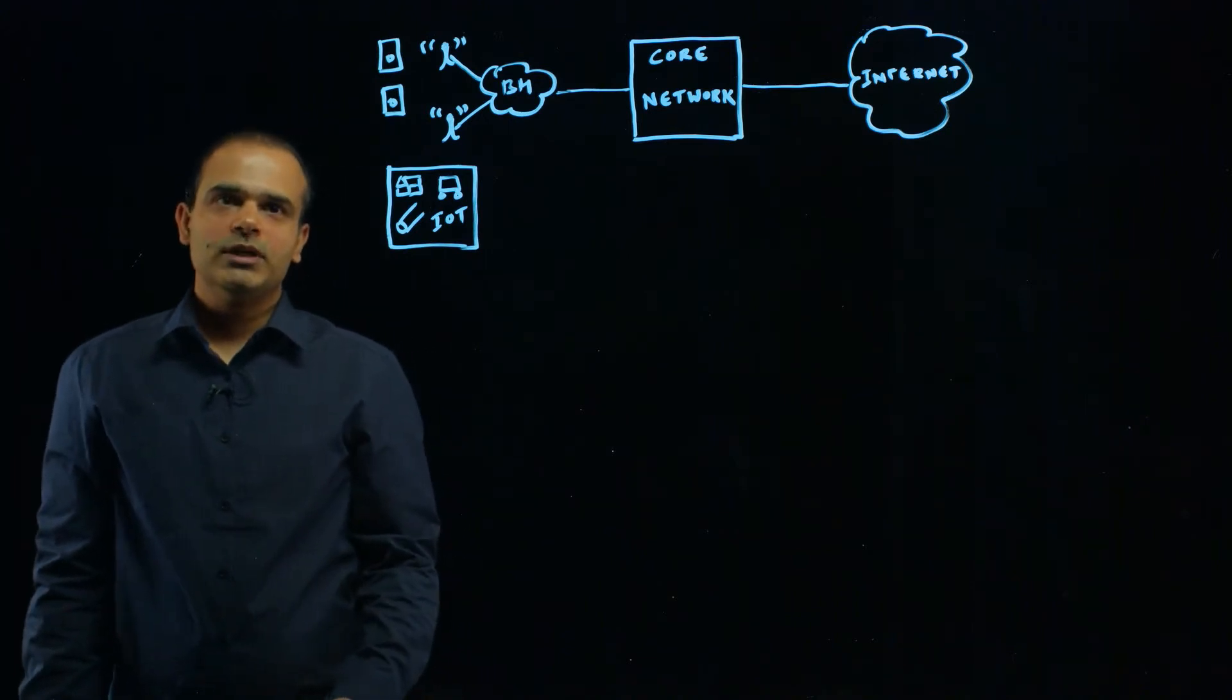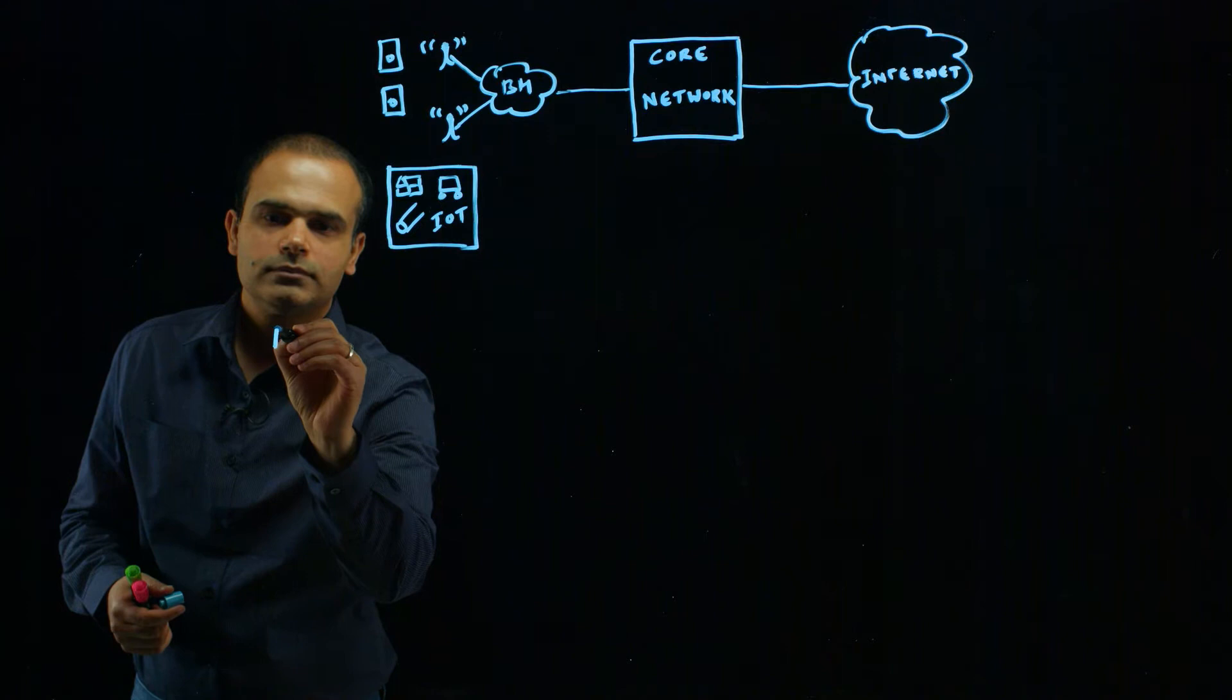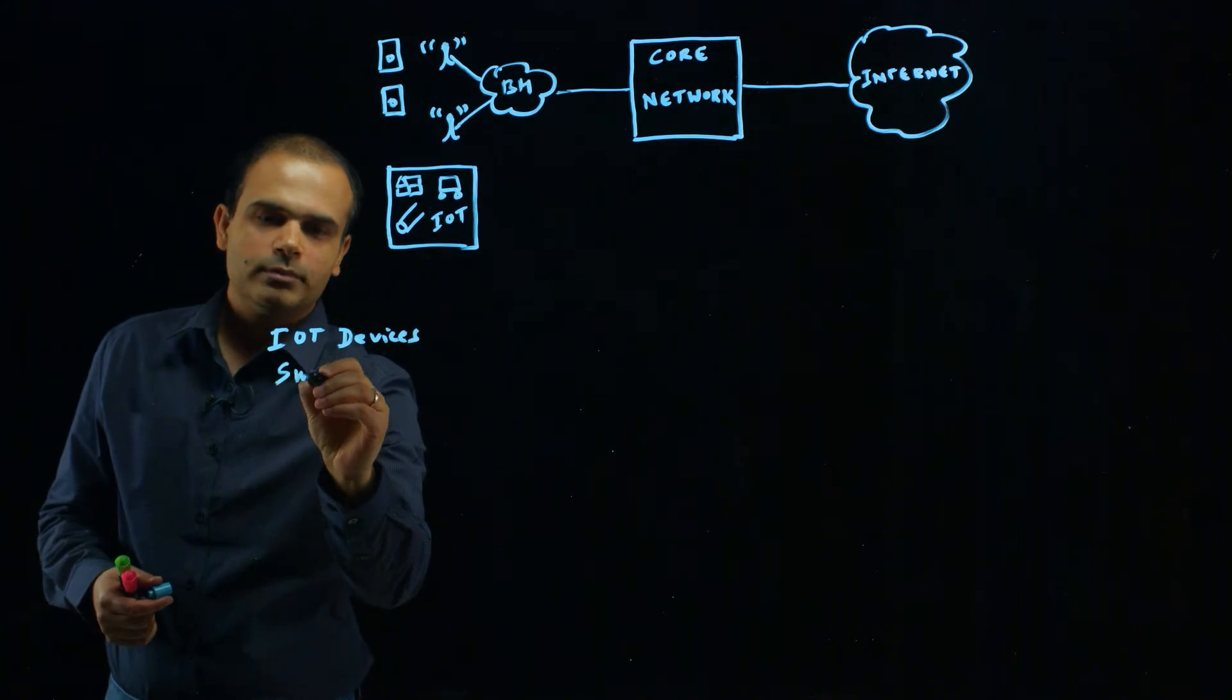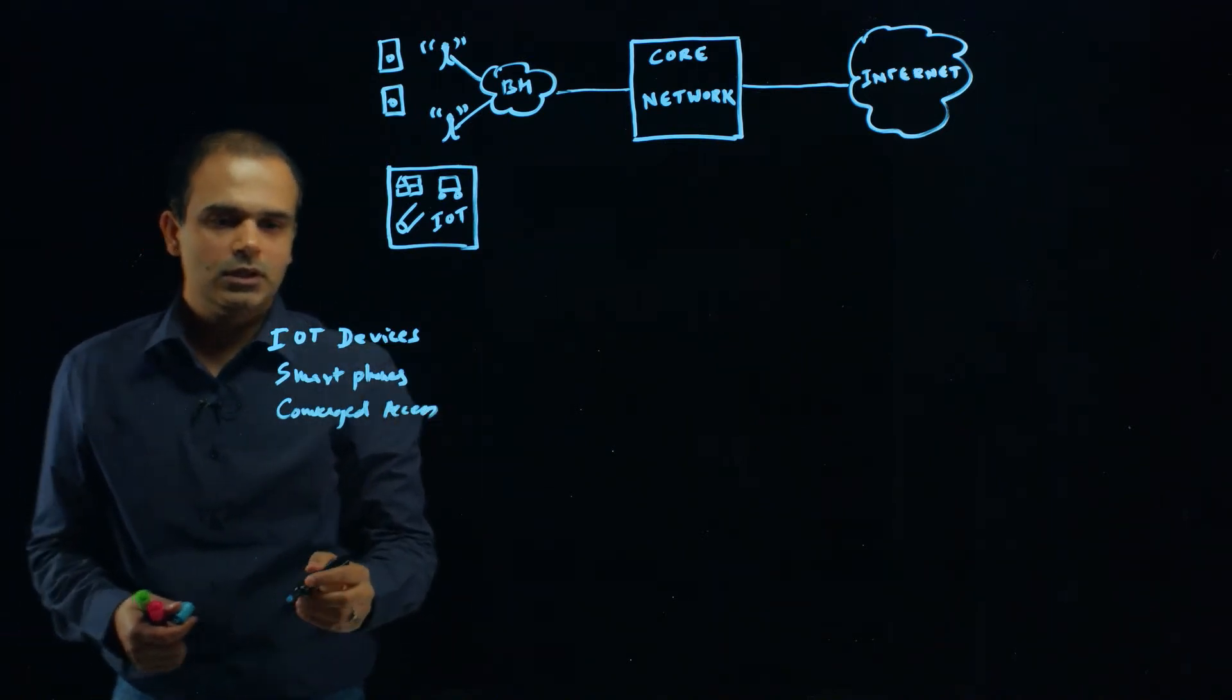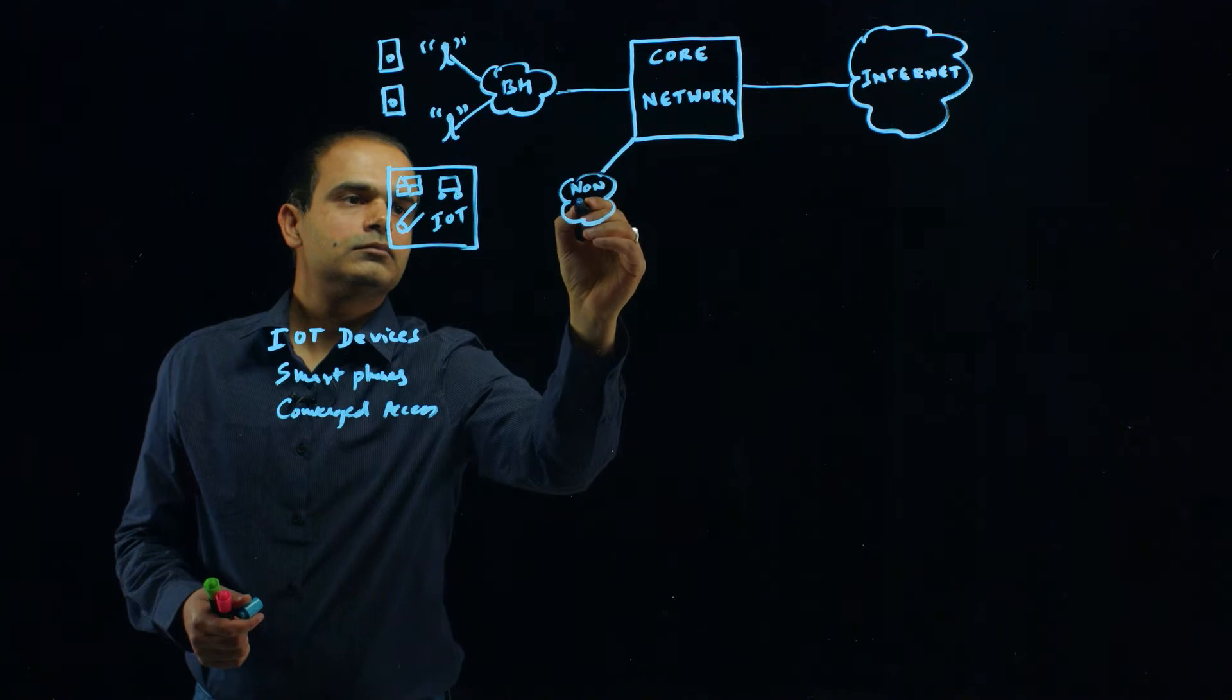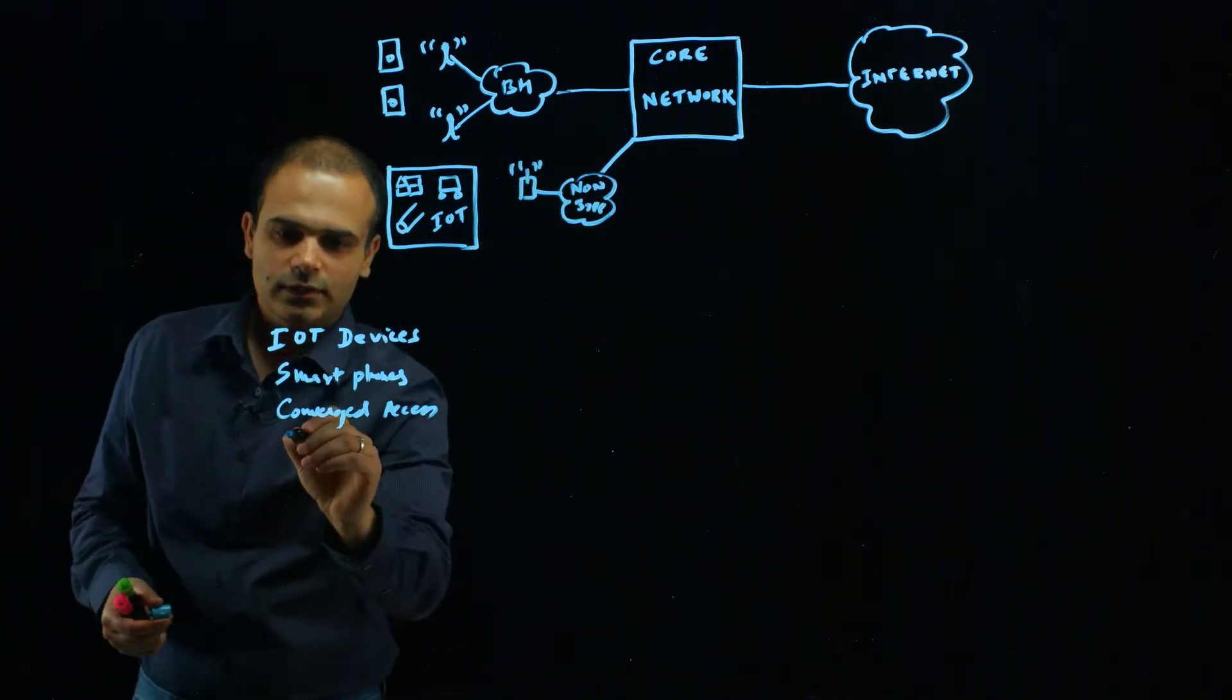The attack surface in mobile networks has changed due to increased use of IoT devices. The smartphones have become more powerful, and there has been increased use of converged access with wireline and non-3GPP access, which connects to Wi-Fi access points for Wi-Fi offloading, and also increased use of roaming.